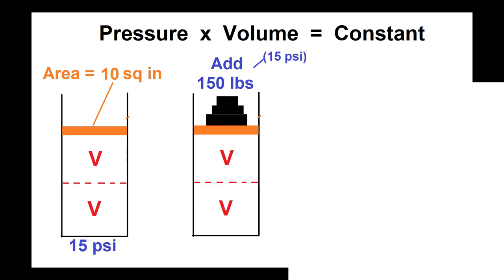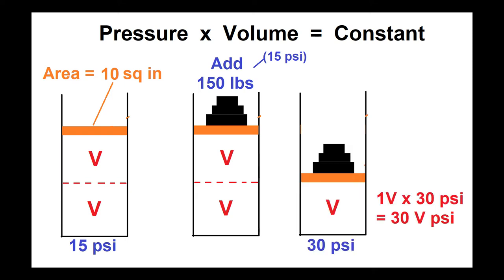That's basically 15 PSI spread over the piston's surface area. What happens next is that the piston will drop until the pressure inside is 15 PSI higher than it started out, and that will exactly balance the 15 PSI of weight that we added to the top. The resulting pressure times volume equation is 1V times 30 PSI which equals 30V PSI, exactly what we had on the prior page.